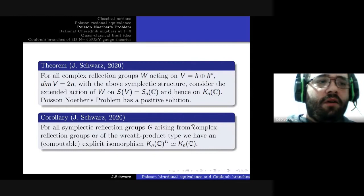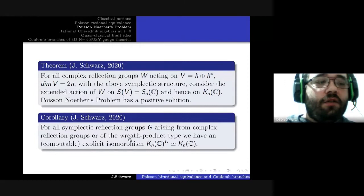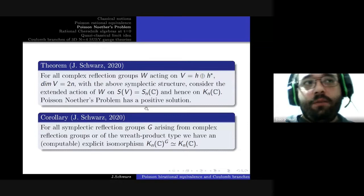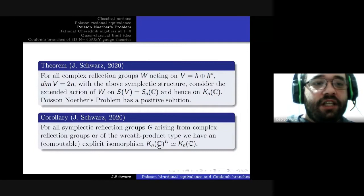For G either arising from a complex reflection group or of wreath product type, we have an explicit isomorphism between the invariants of the standard Poisson field and the Poisson field itself. Moreover, this isomorphism is computable: if you have the action on the vector space, you have an algorithm with fairly modest computational cost that shows the generators realizing this isomorphism.